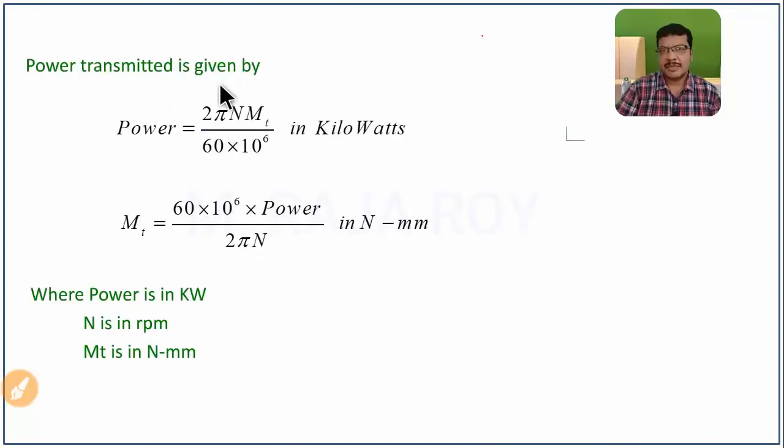Power transmitted is given by power = 2πnmt/60 × 10^6. From this you can get the mt value. Rearranging this equation: mt = (60 × 10^6 × power)/(2πn). Directly you get this in N-mm. This n is in rpm; mt is in N-mm.